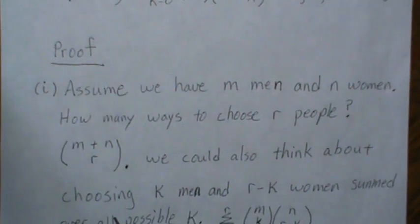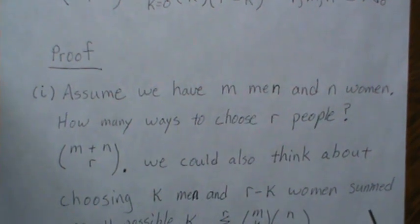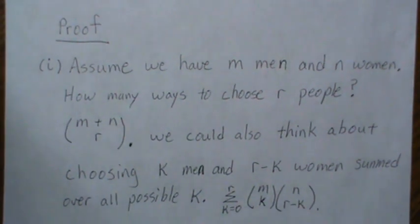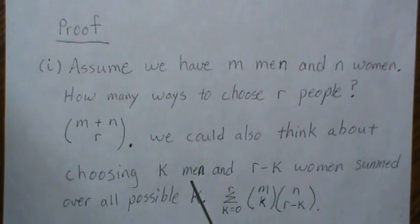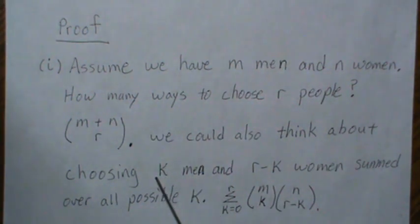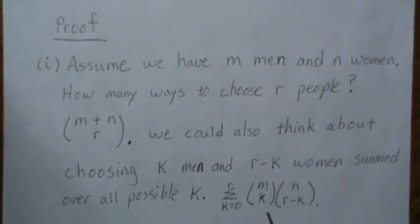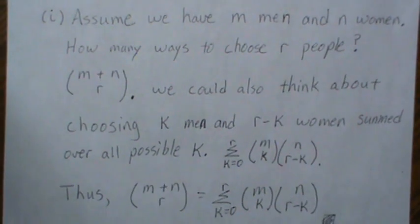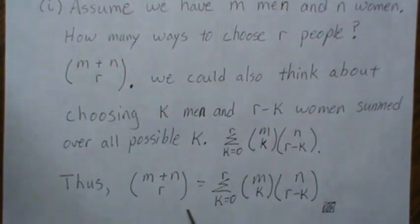But we could also think about this differently: choosing k men and r minus k women, summed over all possible k—zero men, one man, two men, three, etc., and then the others made up of women. The answer to that is the product rule summed over all possible ways to do it, which is this quantity. Thus, these two are equal, and that's one valid proof.